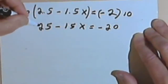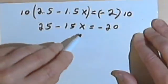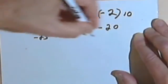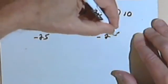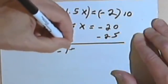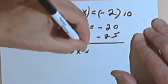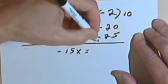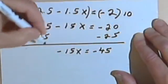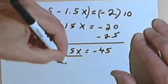Now all I have to do is subtract 25 from both sides, because I want to isolate this x. So minus 25 minus 25. On the left I'll just have a negative 15x equals negative 20 and negative 25 will be negative 45. Divide both sides by negative 15.